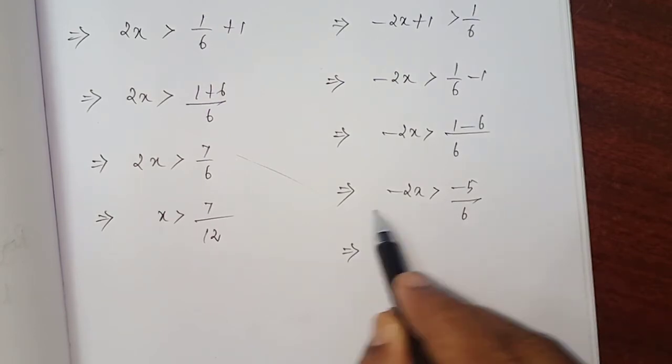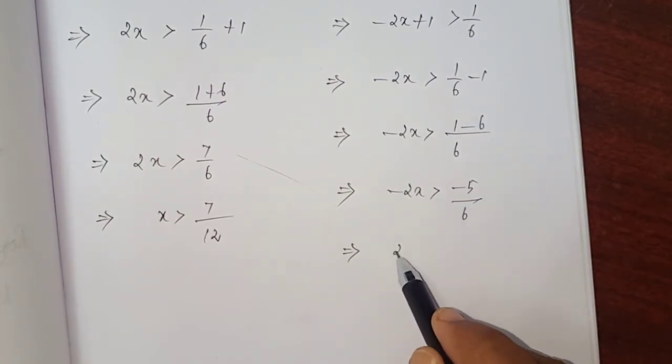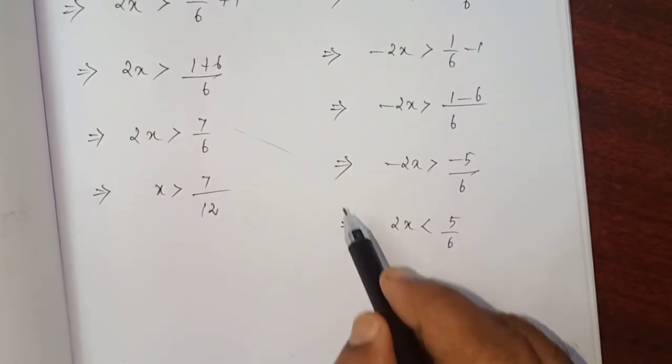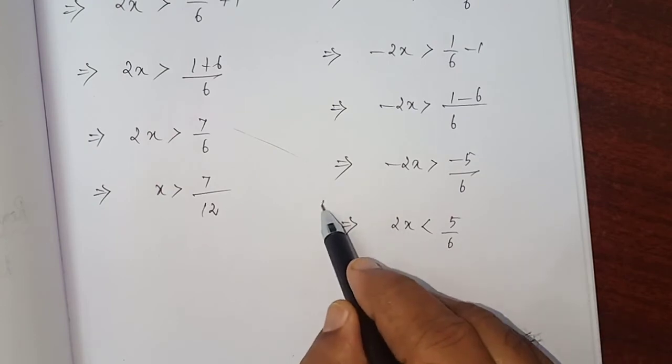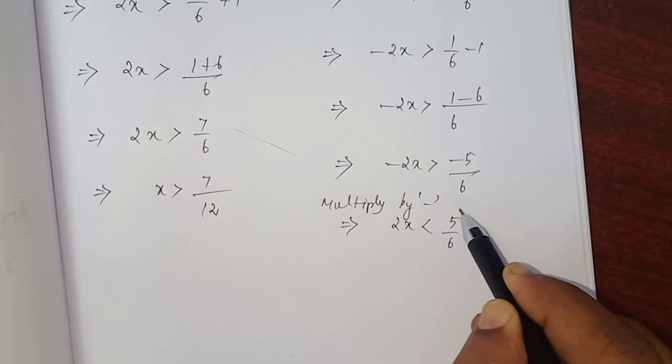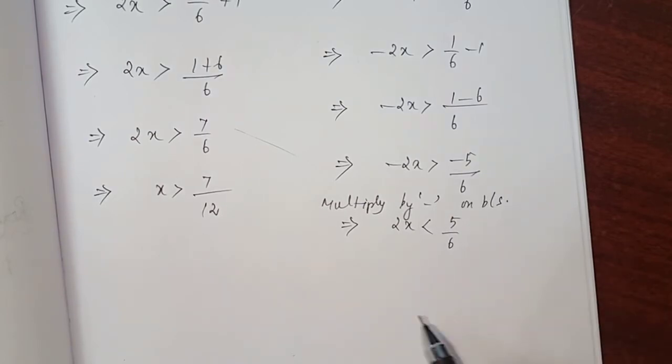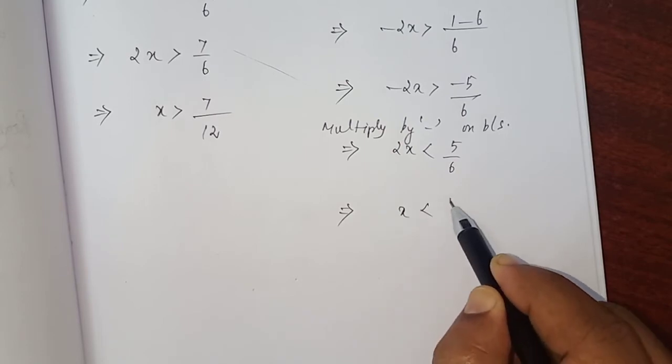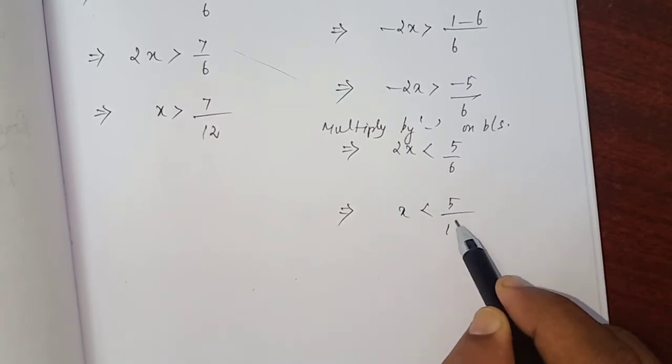If you multiply minus on both sides, minus 2x become plus 2x and greater than becomes less than, and minus 5 by 6 become plus 5 by 6. For your reference, I write over here: multiply by minus on both sides. Which implies x which is less than 5 divided by 2, 6 or 12.